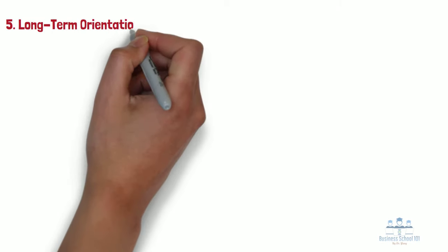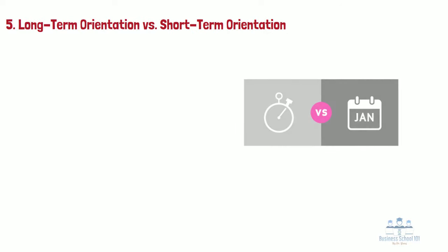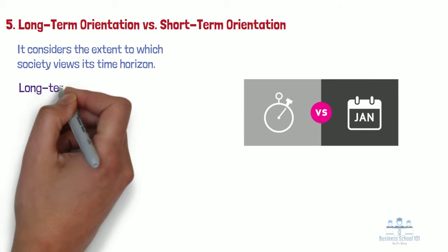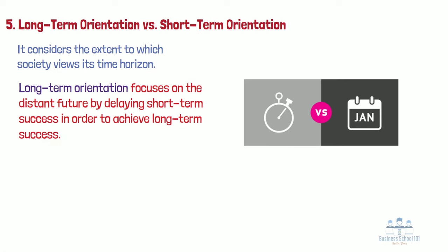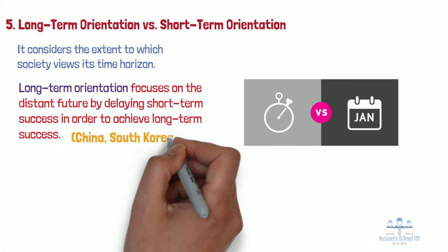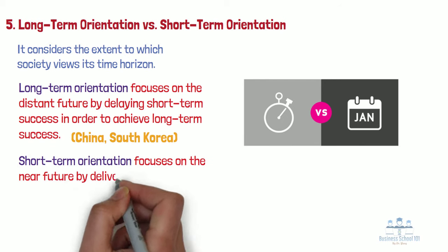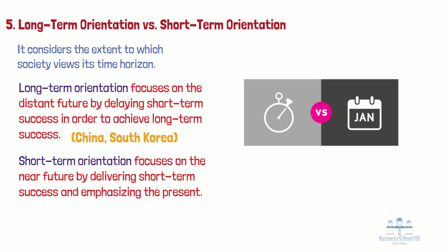Number 5: Long-Term Orientation vs. Short-Term Orientation. This dimension considers the extent to which society views its time horizon. Long-term orientation focuses on the distant future by delaying short-term success in order to achieve long-term success, emphasizing perseverance and growth. In contrast, short-term orientation focuses on the near future by delivering short-term success and emphasizing the present. This dimension was added by Hofstede after the original four, in an effort to understand the difference in thinking between the East and the West.